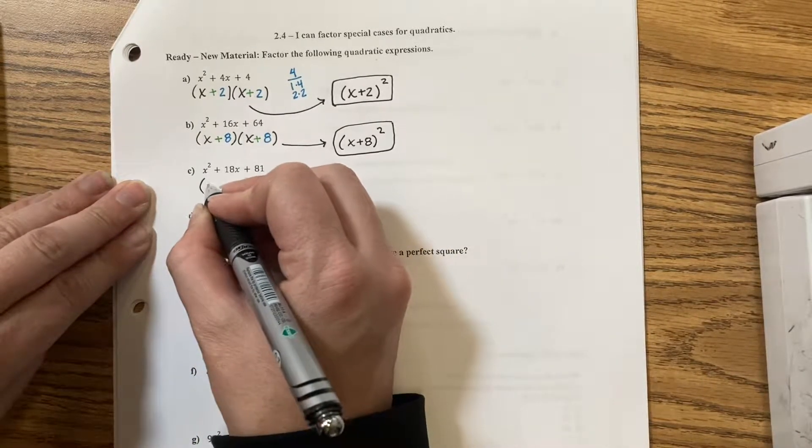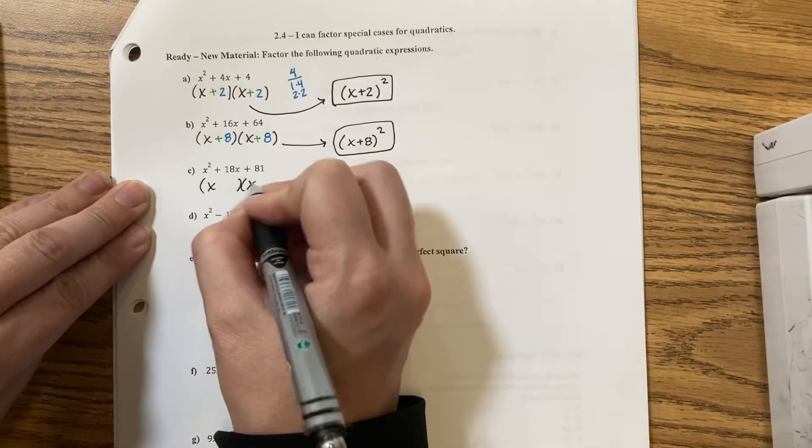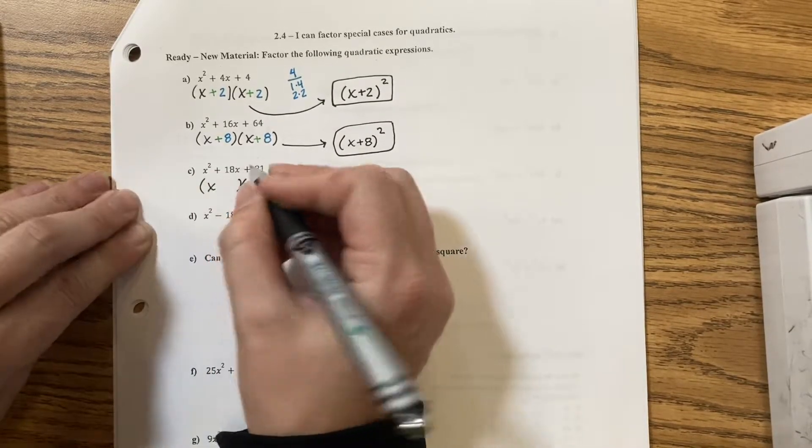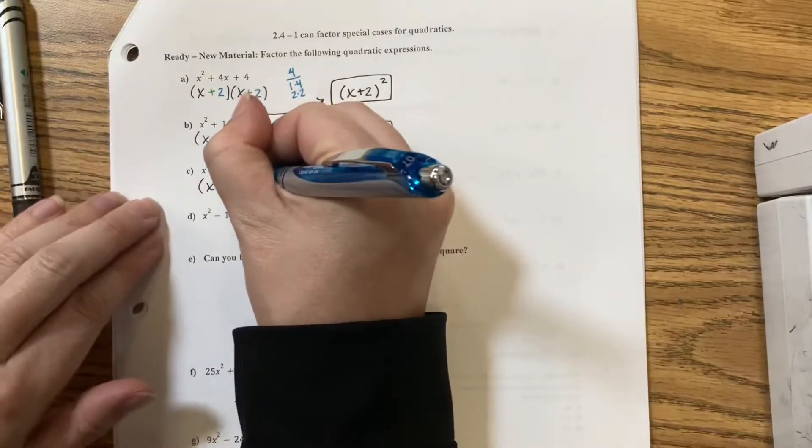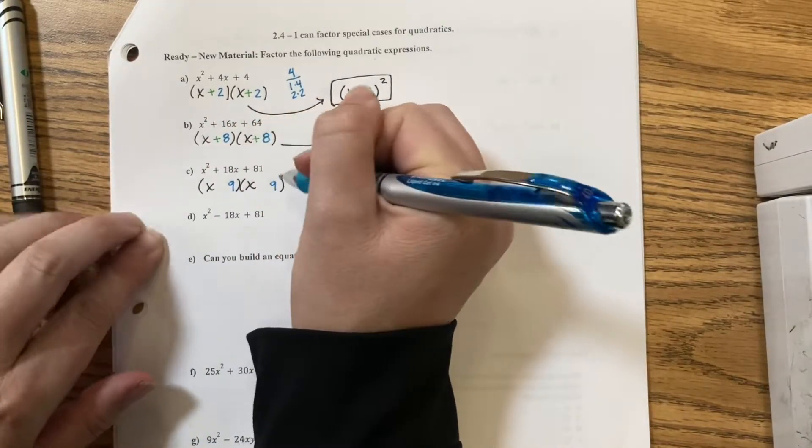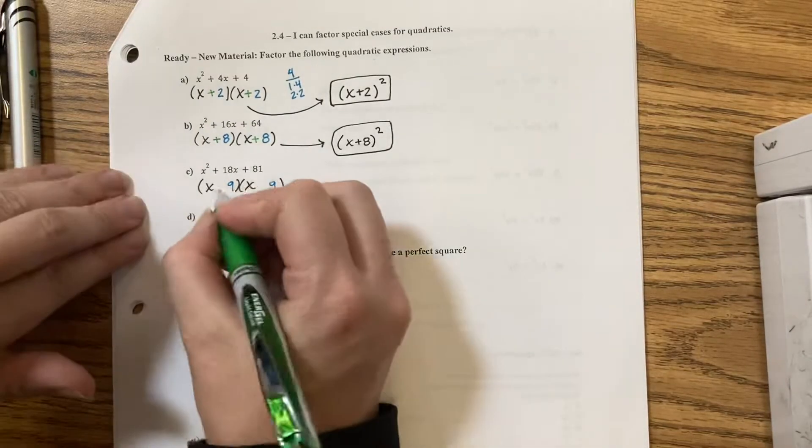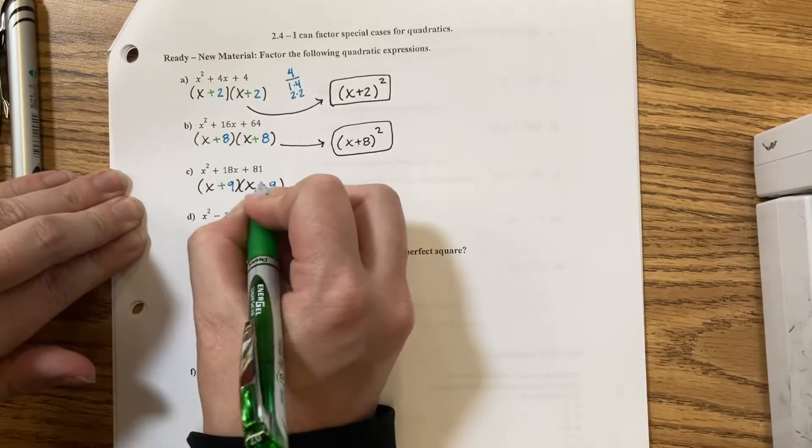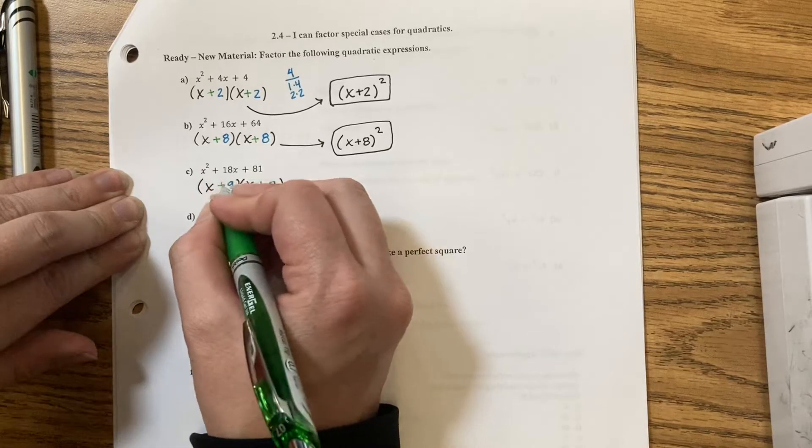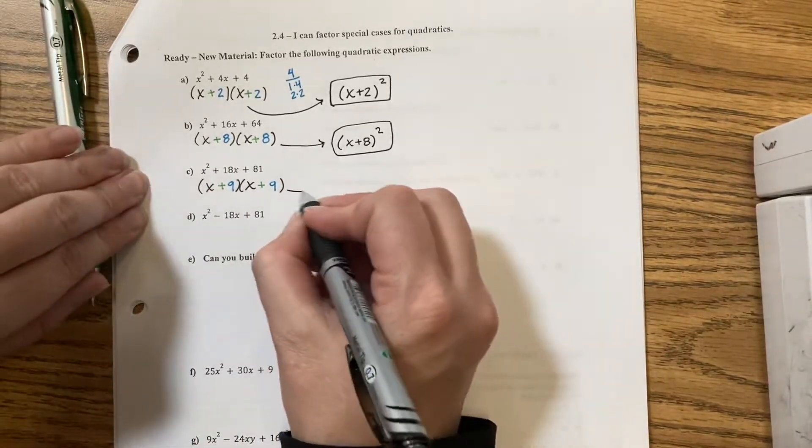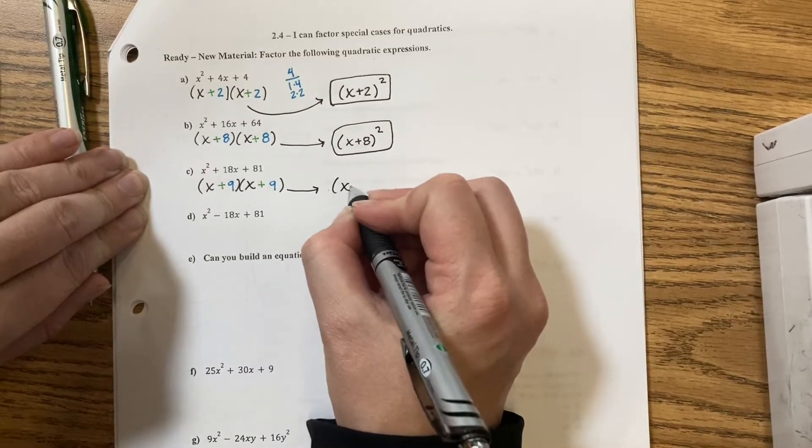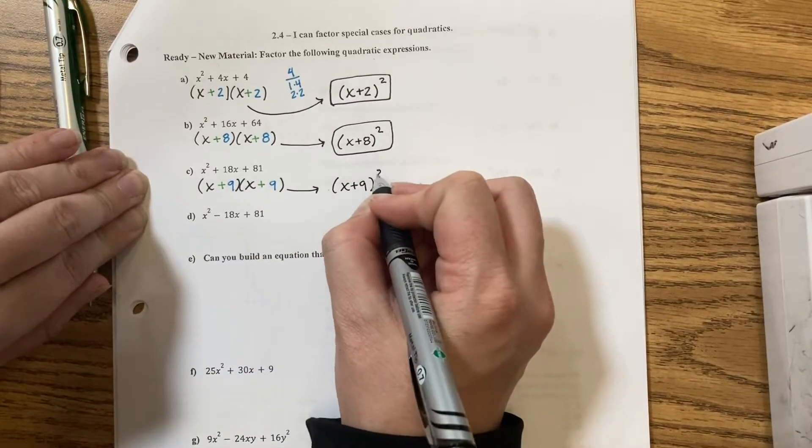Question C. x times x is x squared. 81 is a perfect square. 81 would be 9 times 9. To get 18, I'd have to do plus and plus. 9 plus 9 is 18. 9 times 9 is 81. That gives me x plus 9 squared.